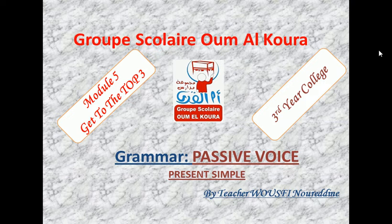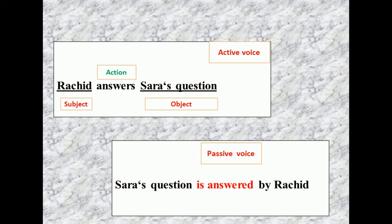Look here — this is the form of a sentence. We have the subject 'Rashid,' the verb 'answers,' and the object 'Sarah's question.' If you want to ask about the object, we say: 'What does Rashid answer?' — the answer is 'Sarah's question.' In the passive form, we say: 'Sarah's question is answered by Rashid.'